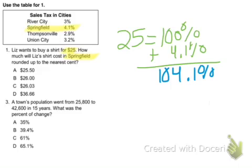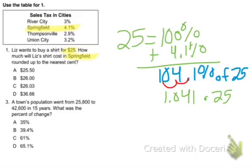And we want to know what is 104.1% of 25. So we rewrite this as a decimal, which is 1.041 times 25. And we get $26 and...